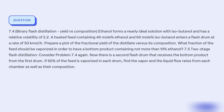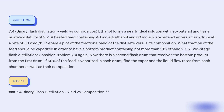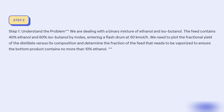Our objective is to determine the fraction of the feed that needs to be vaporized in order to achieve a bottom product containing not more than 10% ethanol in a binary flash distillation process involving ethanol and isobutanol. We are dealing with a binary mixture where the feed contains 40% ethanol and 60% isobutanol by moles, entering a flash drum at 50 kmol/h. We need to plot the fractional yield of the distillate vs its composition and determine the fraction of the feed that needs to be vaporized.